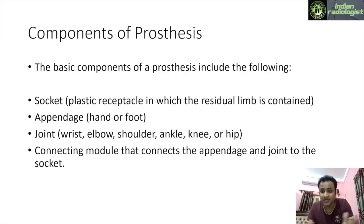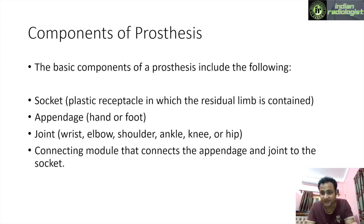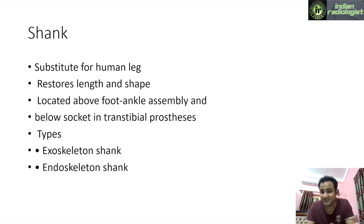Coming to the main part — what are the components of a prosthesis? The basic components include: a socket, which is a plastic receptacle where the residual limb is contained; an appendage, which may be a hand or foot depending on whether it is upper or lower limb; a joint, which is the connection between the appendage and the main proximal part of the limb — such as the wrist, elbow, shoulder, ankle, knee, or hip; and a connecting module that connects the appendage and joint to the socket.